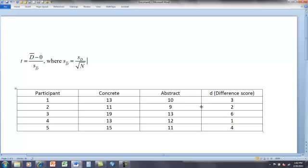And what you're going to do with these d-scores is you're going to find the standard deviation of them, S sub d, or this value right here. Then you're going to find the standard error of the difference scores by dividing by the square root of however many participants you had.